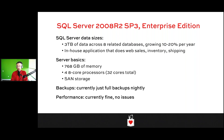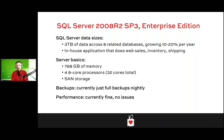They did scale this thing up: four eight-core processors, all licensed with Enterprise Edition, and 768 gigs of memory. This server kind of slipped through the cracks — no one's been doing log backups on it. It was in simple recovery model and they're just doing full backups every night. Performance is fine: CPU is not overloaded and they're able to cache a lot of data in memory, so no one's complaining about performance right now.